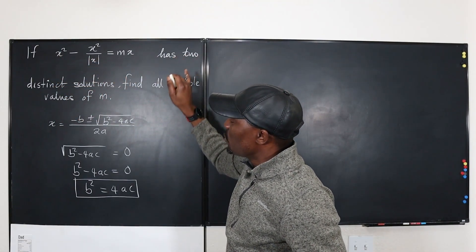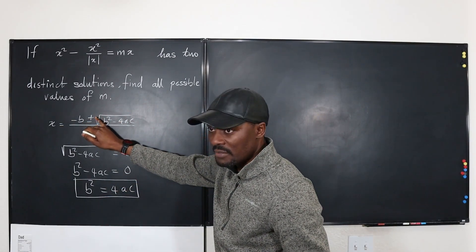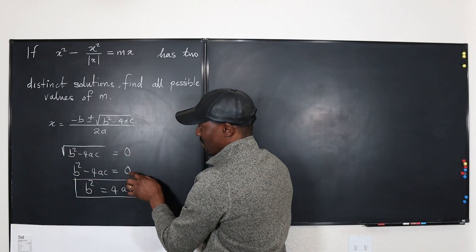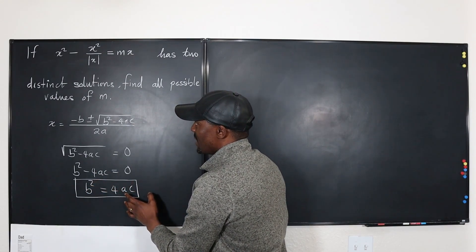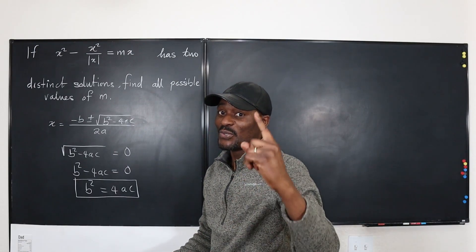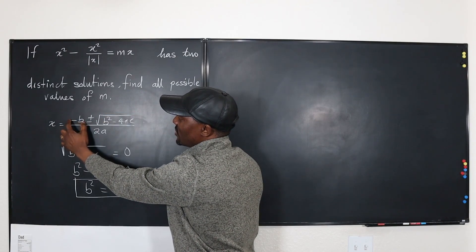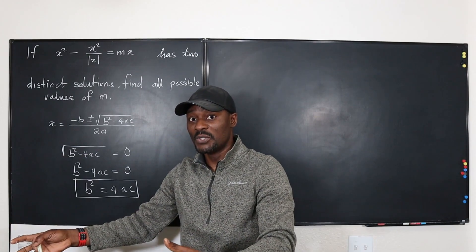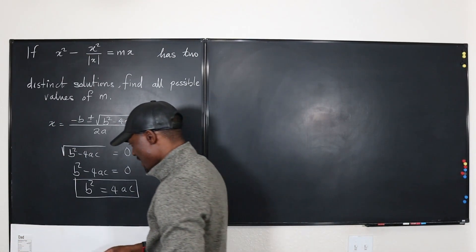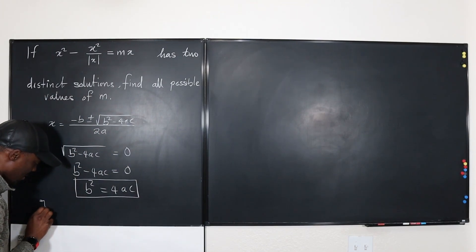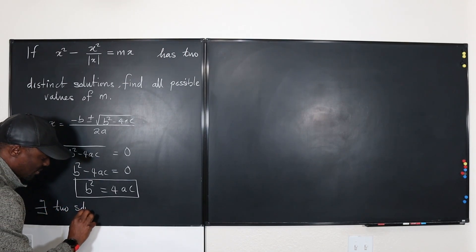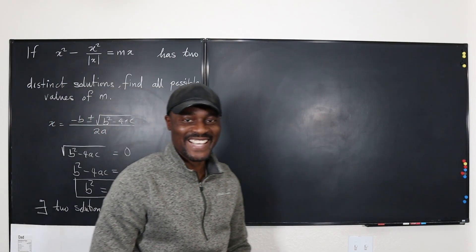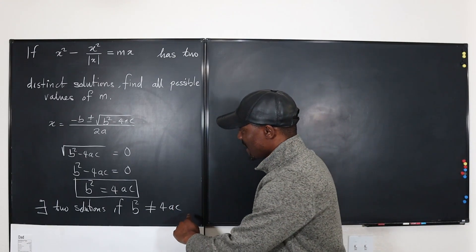If a quadratic equation has two distinct solutions, the expression under the square root cannot be zero. That means b squared minus 4ac is not zero, and b squared is not equal to 4ac. If b squared equals 4ac, your plus or minus becomes plus or minus zero, giving just one solution: negative b over 2a. So a quadratic equation has two distinct solutions if b squared is not equal to 4ac.